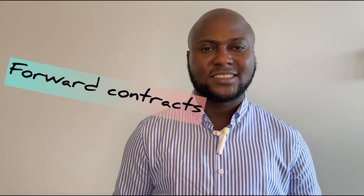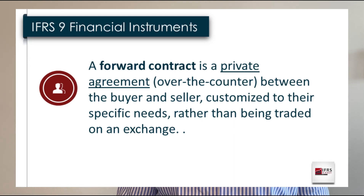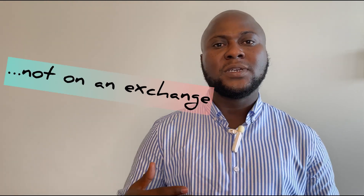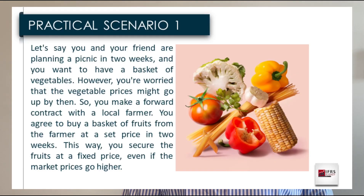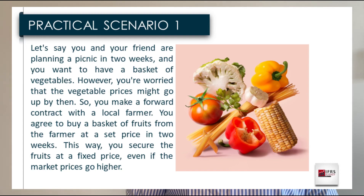A forward contract is simply a private agreement — over the counter — between buyer and seller that is customized to their specific needs rather than being traded on an exchange. The transaction is between two parties who agree on the terms and conditions together. It is bespoke, meaning both parties customize it to meet each of their needs. For example, let's say you are planning a picnic in two weeks and want a basket of vegetables, but you are worried that vegetable prices might go up by then. So you make a forward contract with a local farmer to buy a basket at a set price in two weeks.